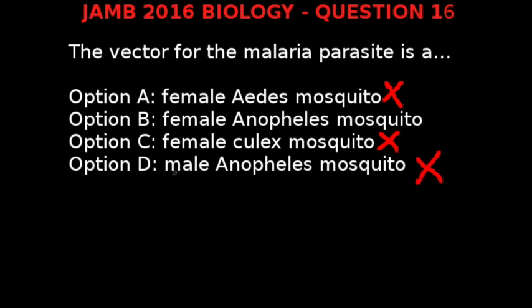The answer is not male Anopheles mosquitoes because male Anopheles mosquitoes live just about one week in the wild and in laboratory conditions. Unlike females, males do not feed on mammalian blood — they use the proboscis to drink nectar from flowers. Our correct answer therefore is option B, female Anopheles mosquito.